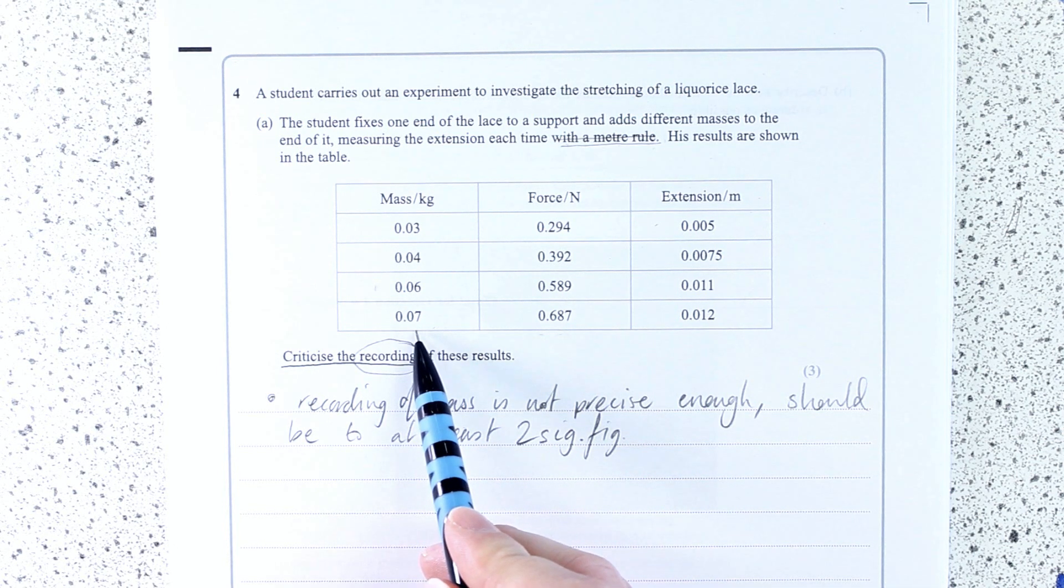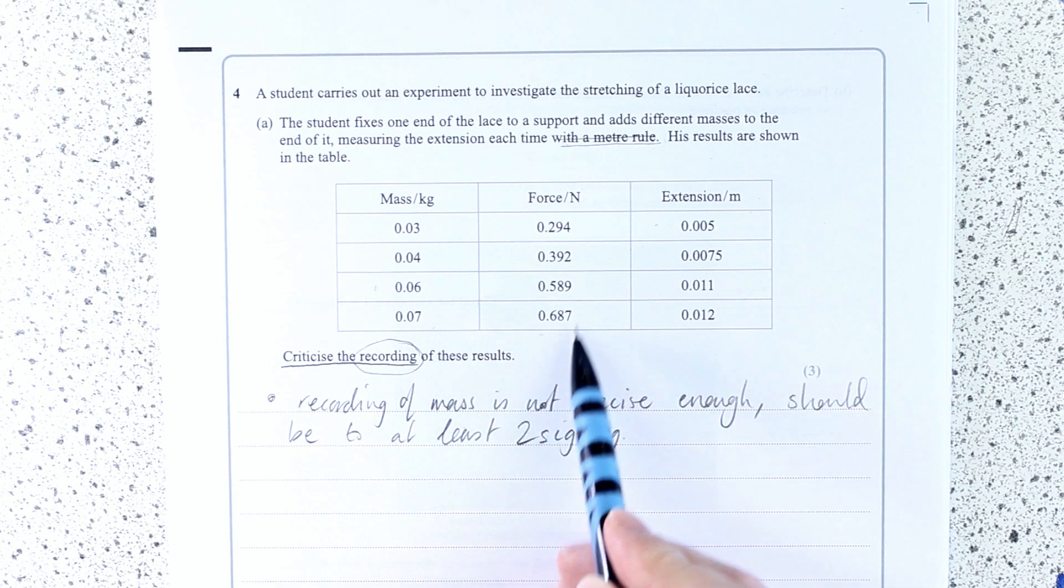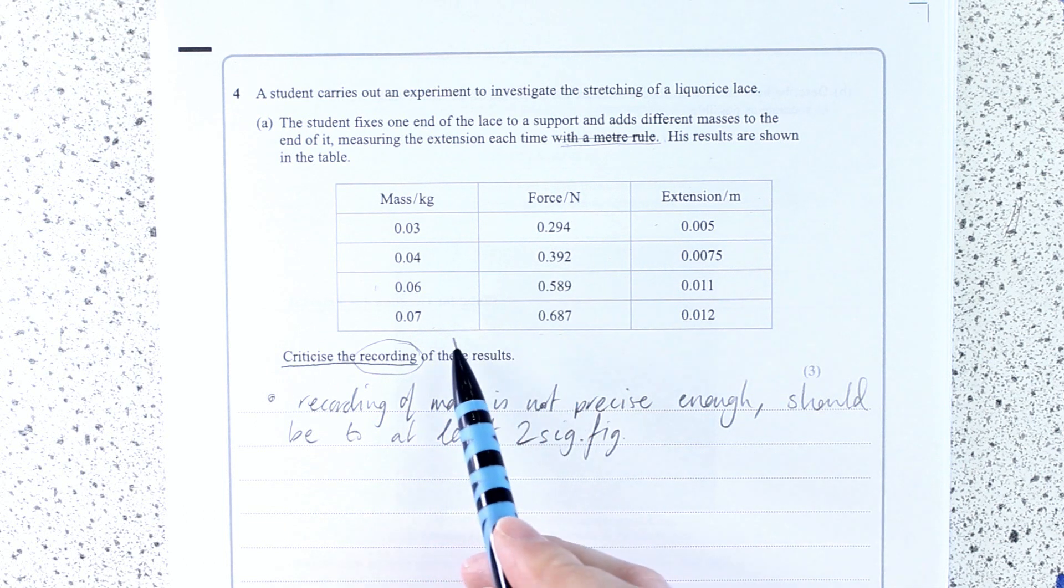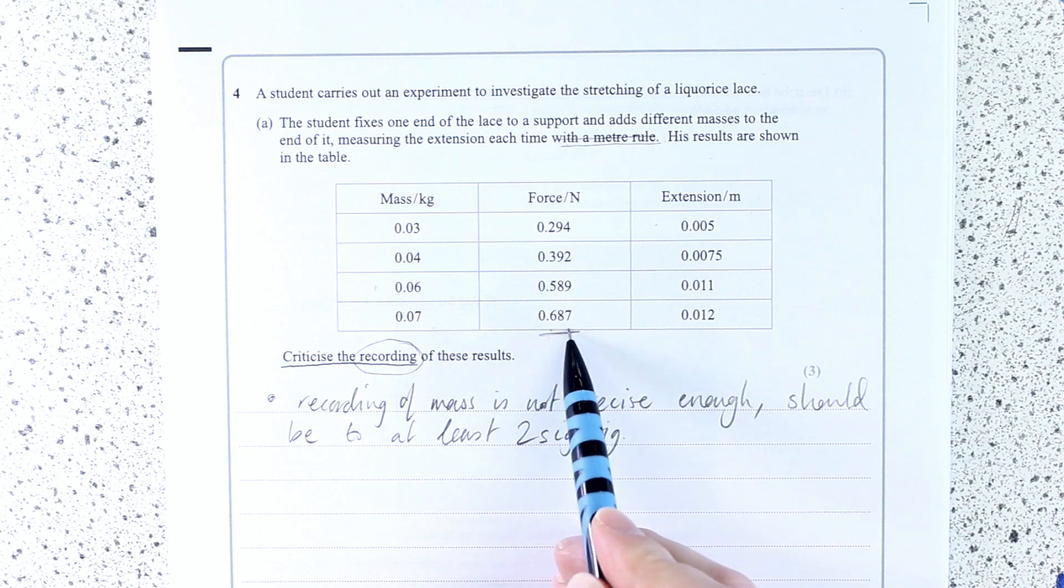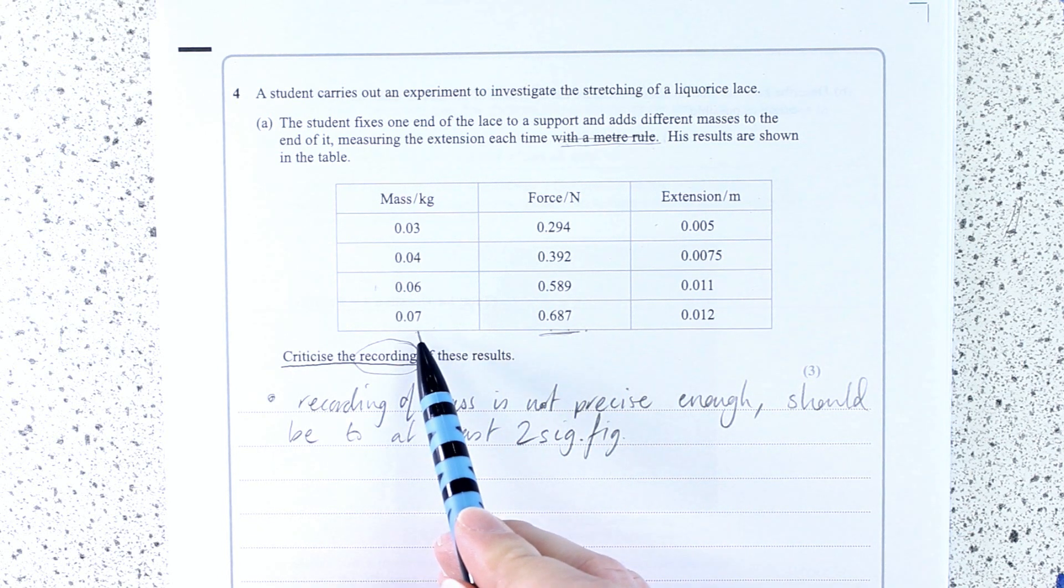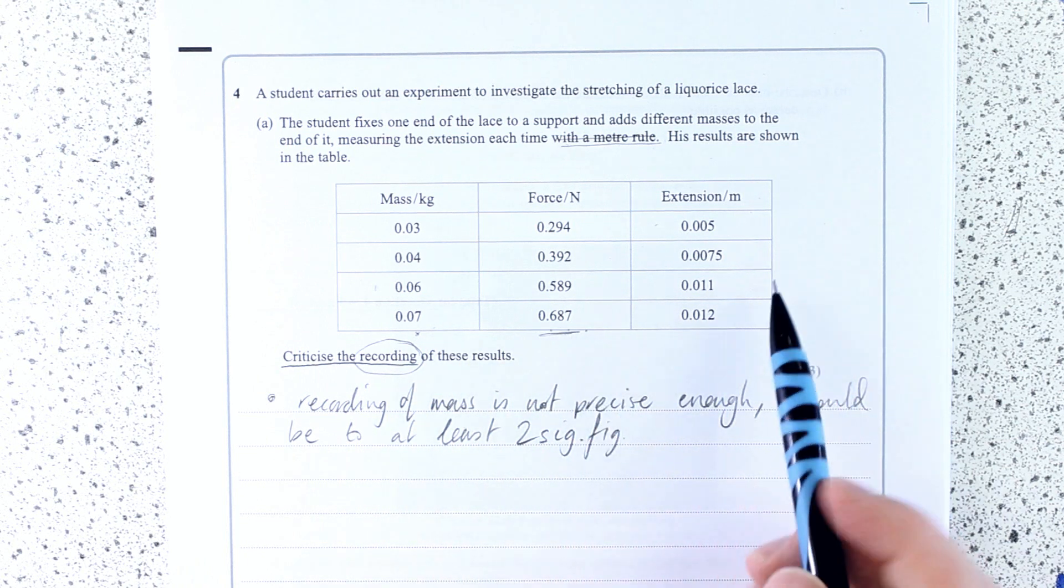Especially if you look at what they've done, they've then times that by 9.81 and they've got this. Well, this cannot be as precise as three significant figures if this reading is only to one significant figure. That's not fair. We would never do that.